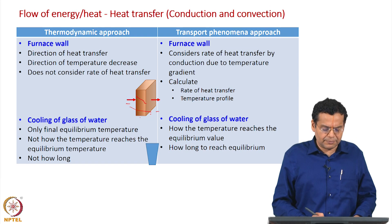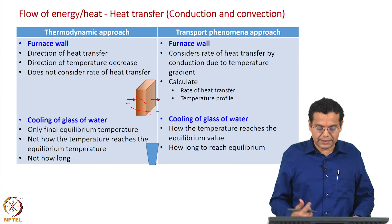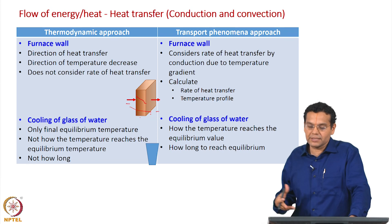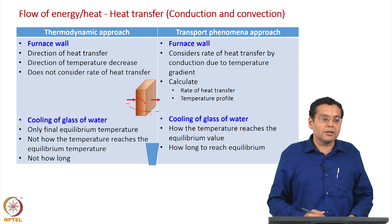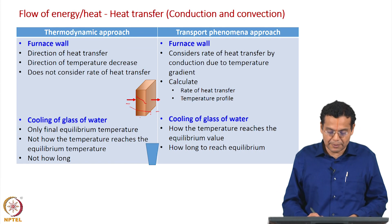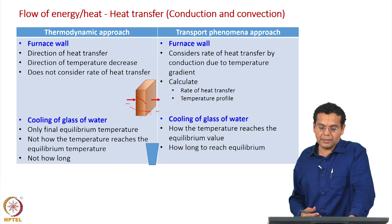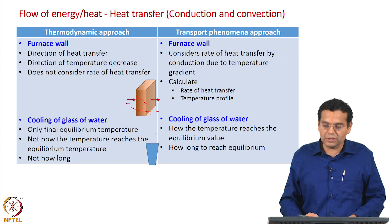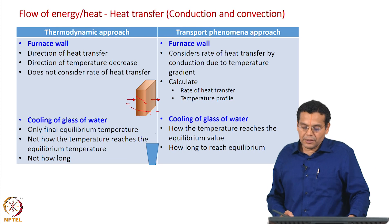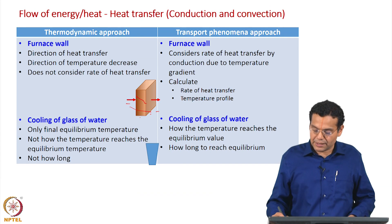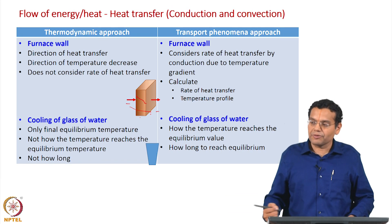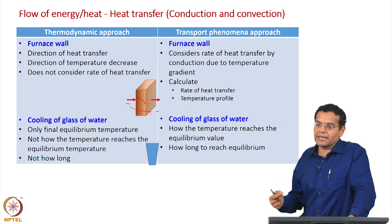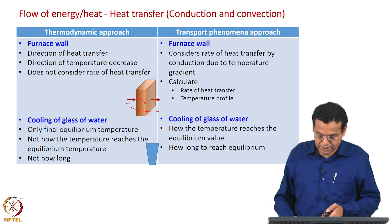Another example: suppose you take warm water and place it at ambient temperature, allowing it to cool. Thermodynamics tells you the final equilibrium temperature — the same as ambient temperature — but does not tell you how fast equilibrium will be reached, how the temperature varies as a function of time, or how long it takes. It doesn't tell you whether temperature decreases linearly or exponentially. Using a transfer phenomena approach, you can find how the temperature cools from high temperature to ambient and how long it takes to reach equilibrium. The time factor, length factor, and area factor are all considered in the transfer phenomena approach.